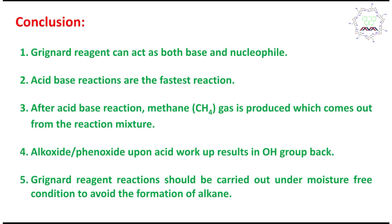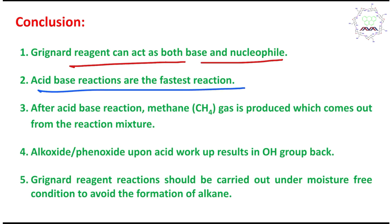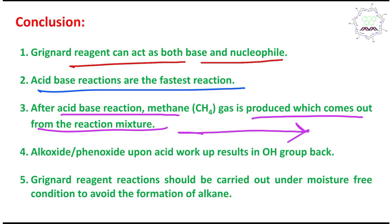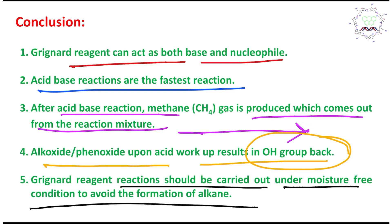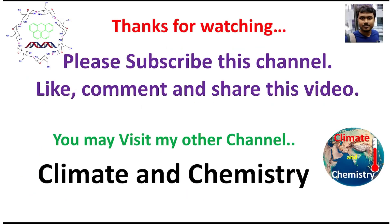In conclusion, what you have learned today: Grignard reagents can act as both a base and a nucleophile. Acid-base reactions are the fastest, and here methane gas is produced which escapes the reaction mixture, driving the reaction forward. The alkoxide or phenoxide upon acidic workup gives back the OH group. Finally, Grignard reagent reactions should be carried out under moisture-free conditions to avoid formation of alkane and waste of the reagent. Thank you all for watching.